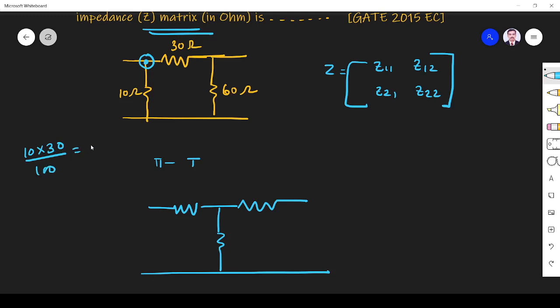So this equals 3 ohms. How can I find this one? For this area, what are the things connecting here?